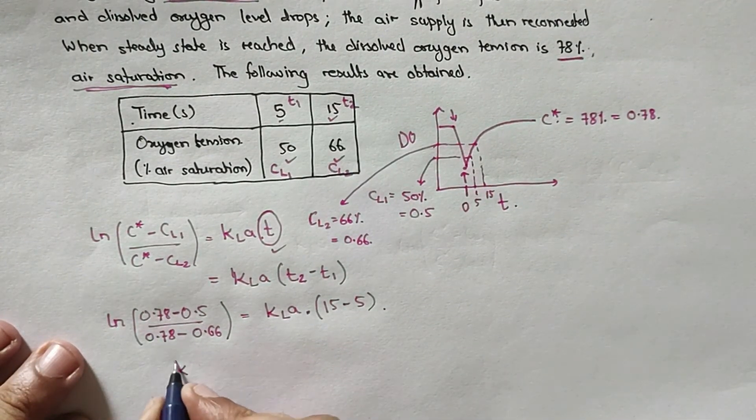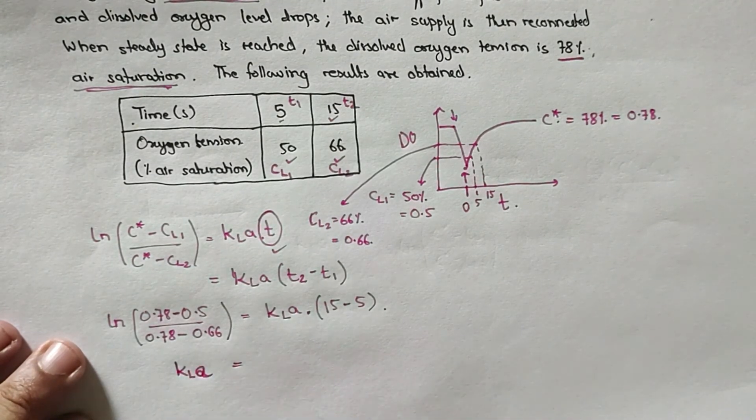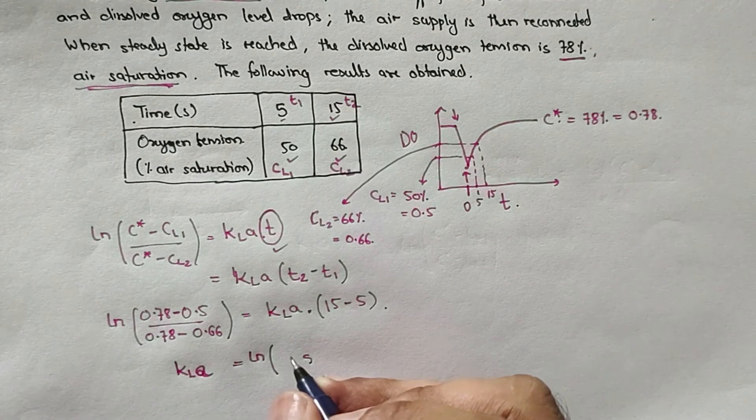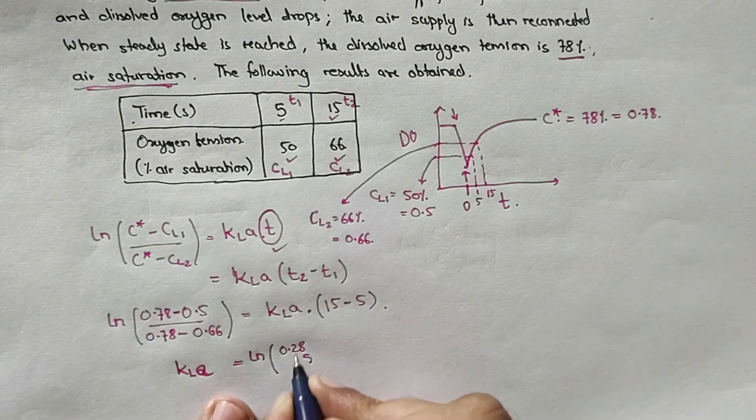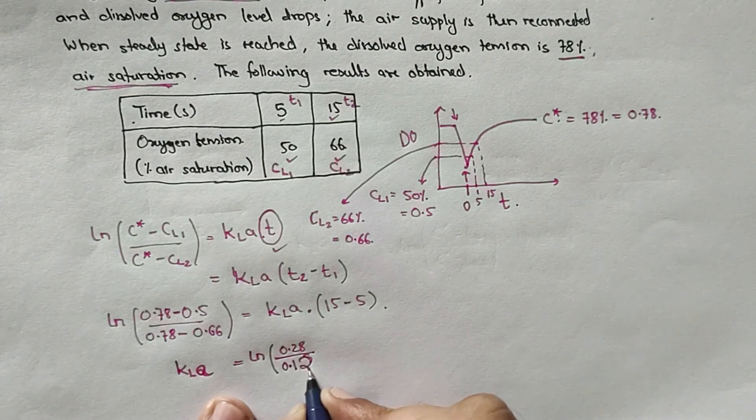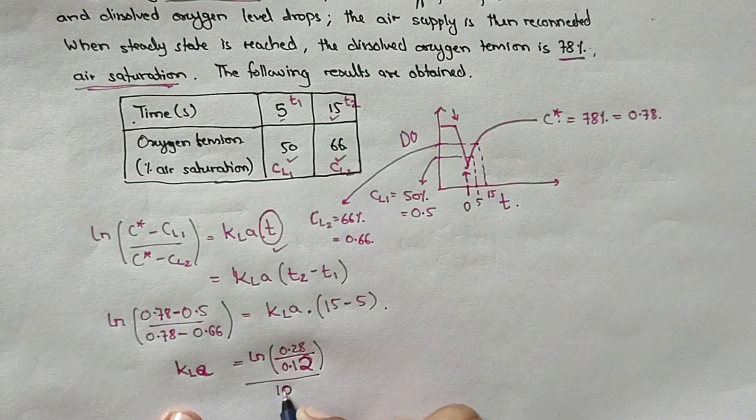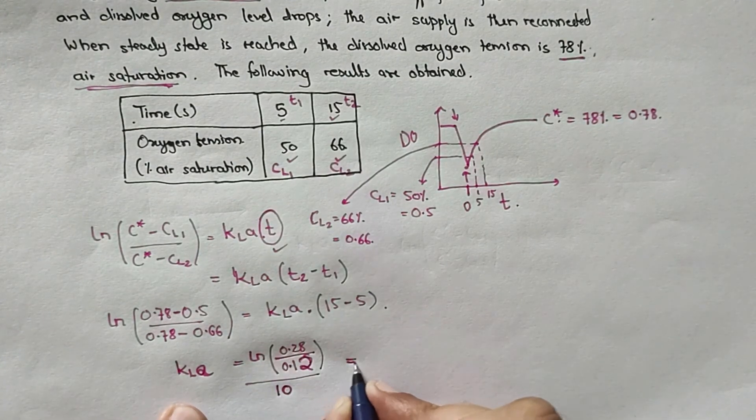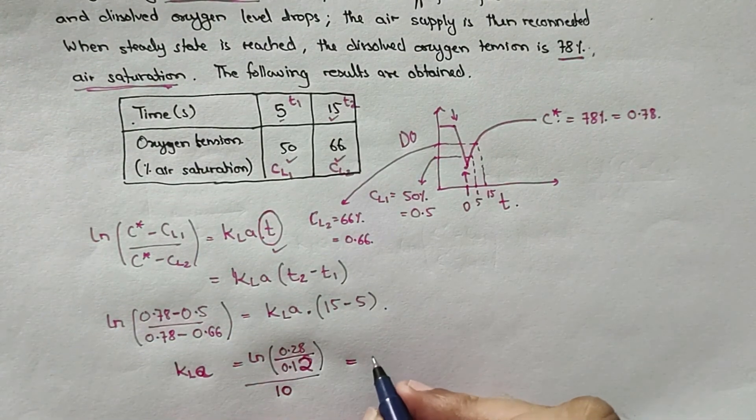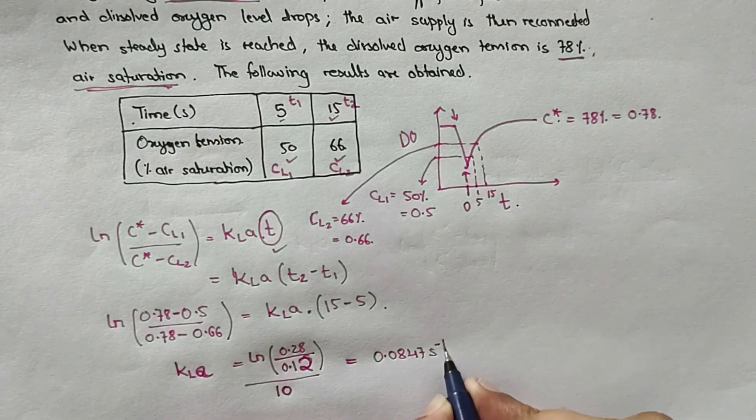So your KLA value will become ln(0.28/0.12) all divided by 10. So this will come out to be 0.0847 per second.